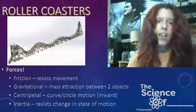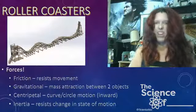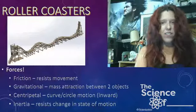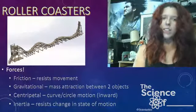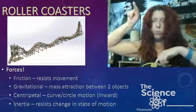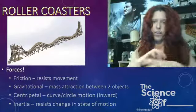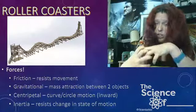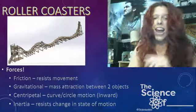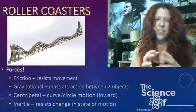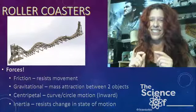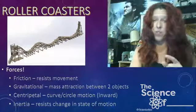Gravitational force is the mass attraction between two objects. Centripetal force is where we get into the loop-de-loops — curves and loops where motion moves inward. We'll touch on centrifugal force a little bit, and then inertia is the resistance to change in motion, which goes hand in hand with gravitational and centripetal forces.